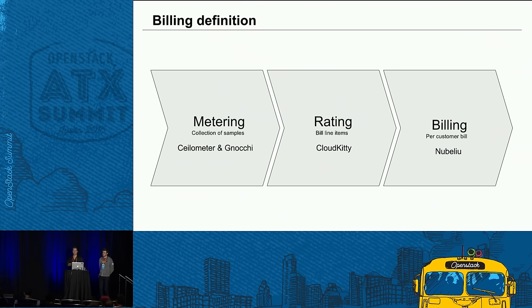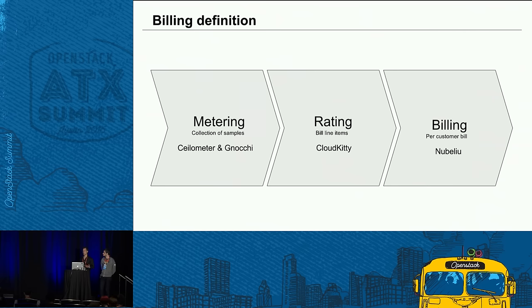Then we have the rating process, which is the process to analyze that collection of samples based on business rules that can be set by the marketing department of your company. Based on that analysis, you will create bill line items. Finally, we have the billing process, which assembles those bill line items into a per-customer bill to start the payment collection.